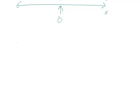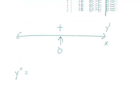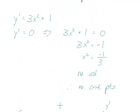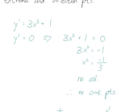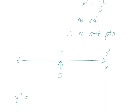Now we can look at the second derivative to examine concavity. The original function was x cubed plus x, the derivative was 3x squared plus 1, so the second derivative is 6x.